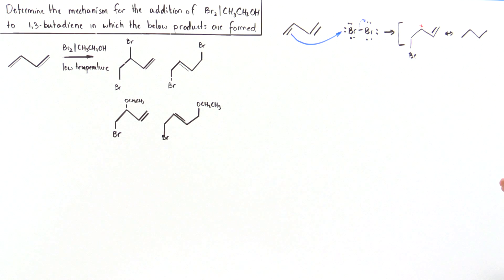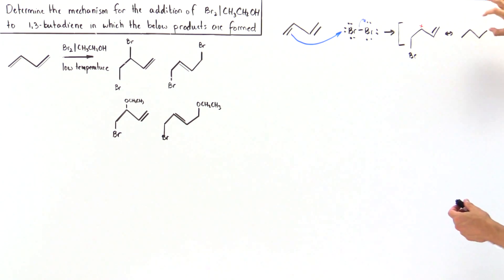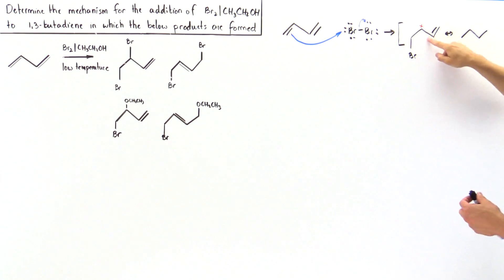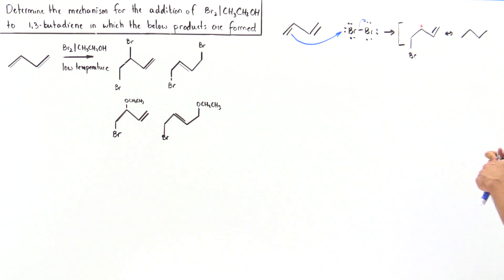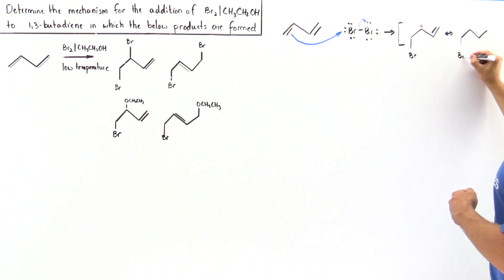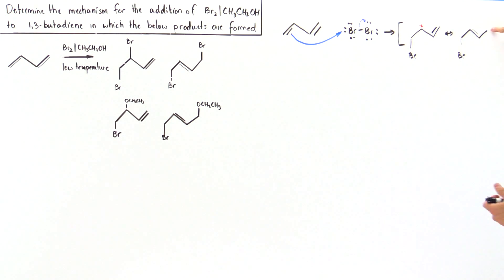We have an empty 2p orbital. This is resonance-stabilized, so this pi bond moves over here, bonding with our 2p orbital. We have a pi bond here, our bromine is here, and now this carbon develops a full positive charge. This is our resonance-stabilized structure.